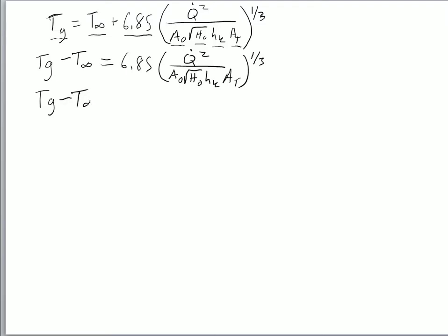So T_g minus T infinity divided by 6.85 is equal to Q dot squared divided by area naught square root H naught, h sub K area total, raised to the one-third power.